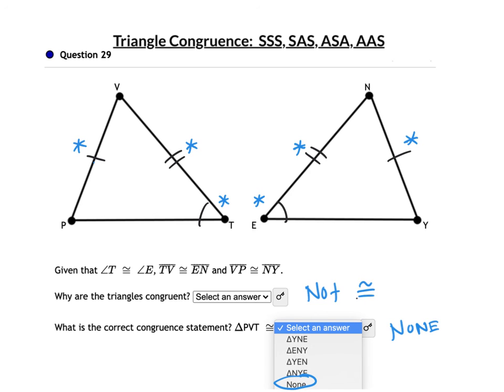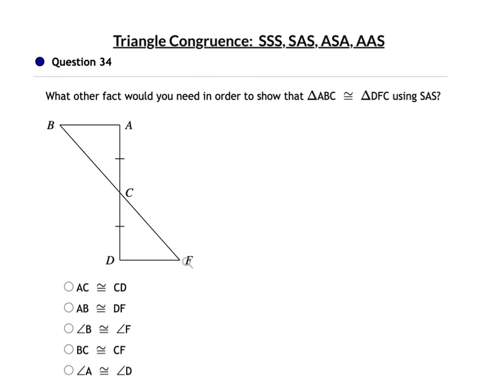Make sure you answer both questions. For these last questions, you need to realize that if you know what vertical angles are, you know that these two angles are congruent — even if it's not listed in the given. Since we know this, the question is: what do I need to have Side-Angle-Side? I need the angle to be between the two sides, so the two sides that would have to be congruent are BC and CF.